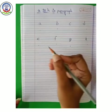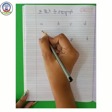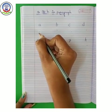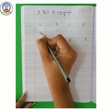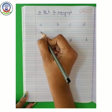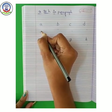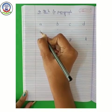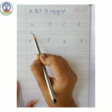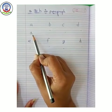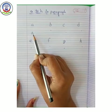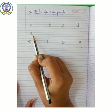First of all, make a curve in blue line. Now, standing line and make a small curve. A. A says A — Apple.